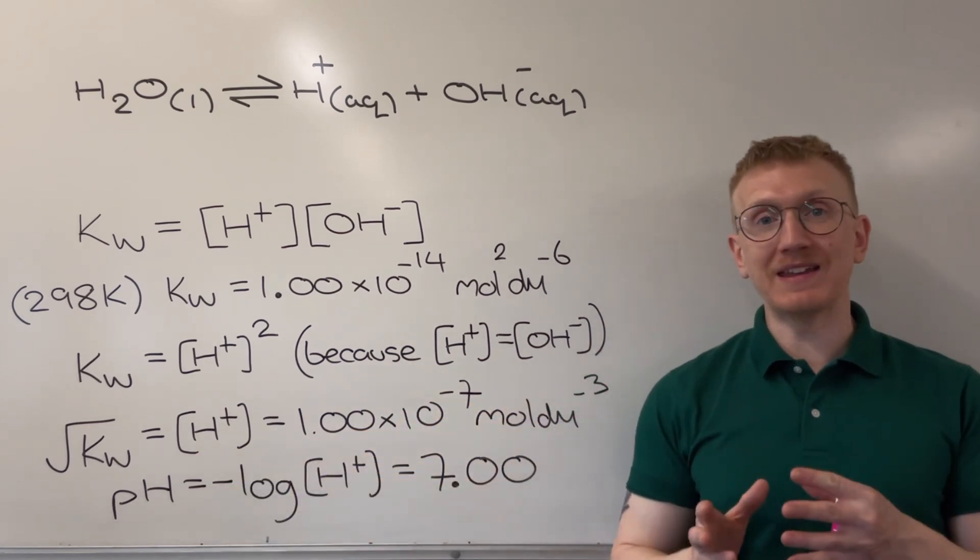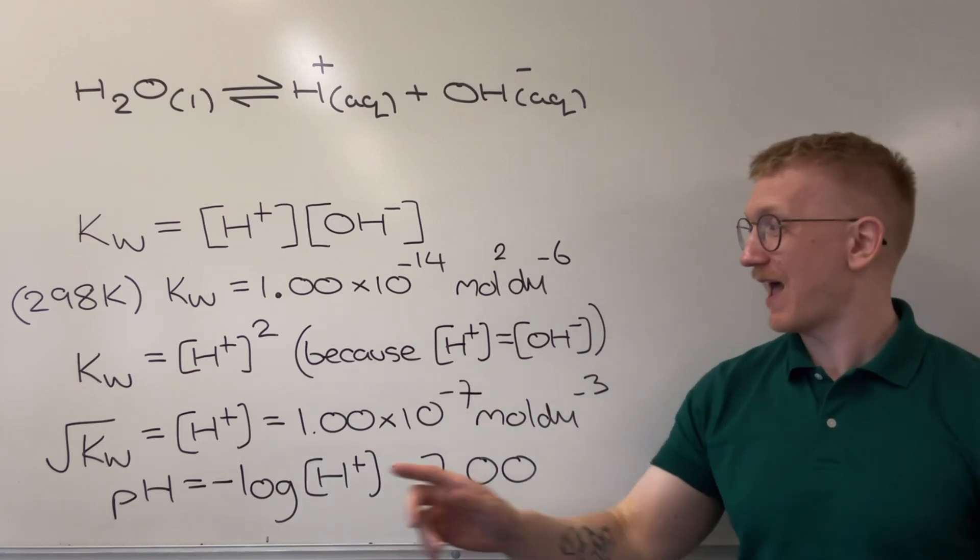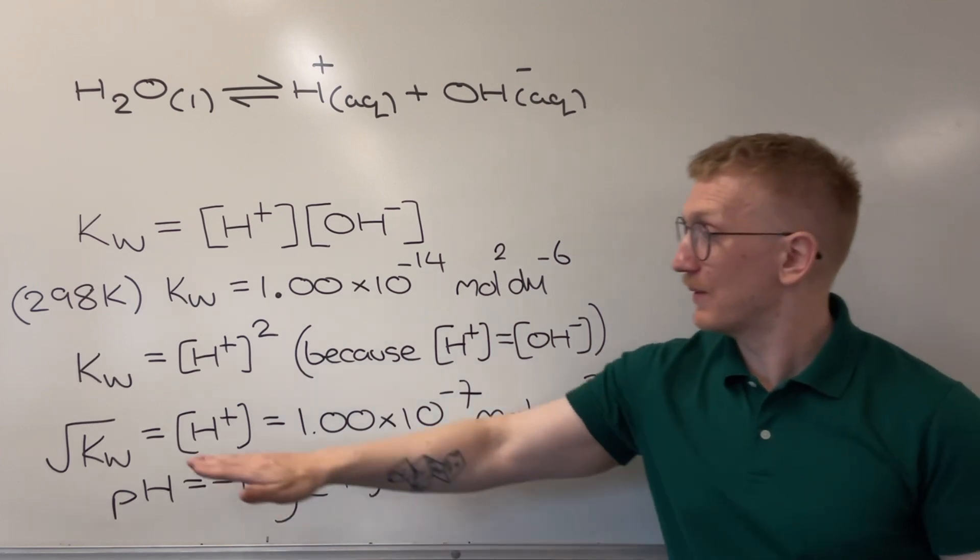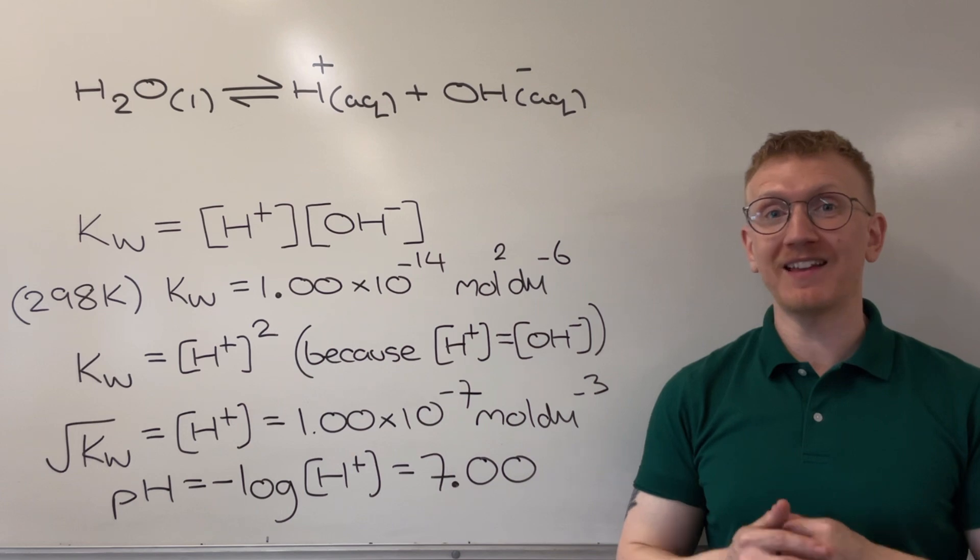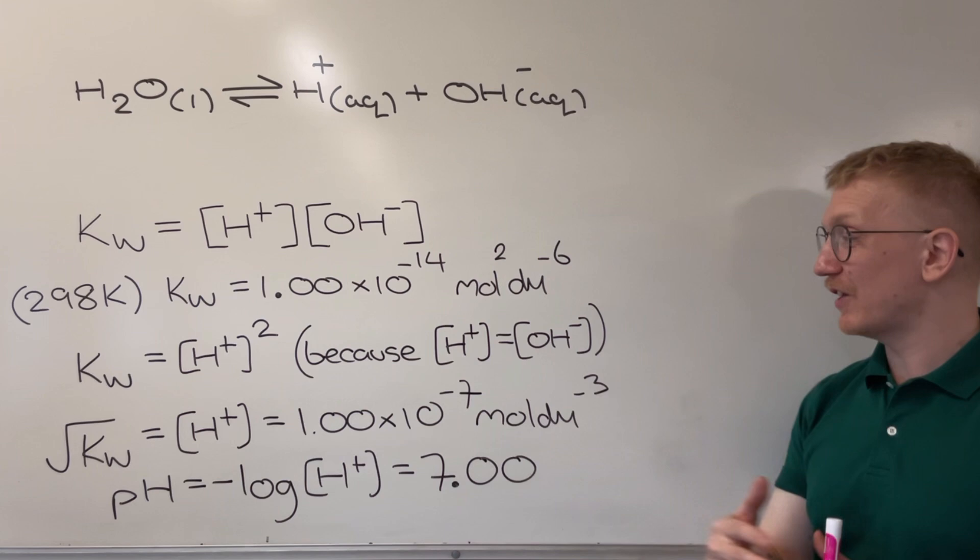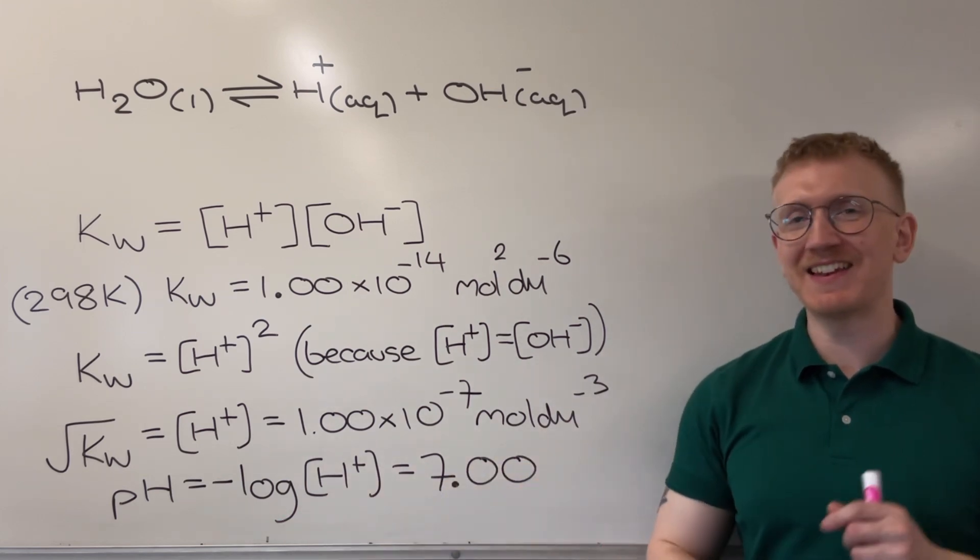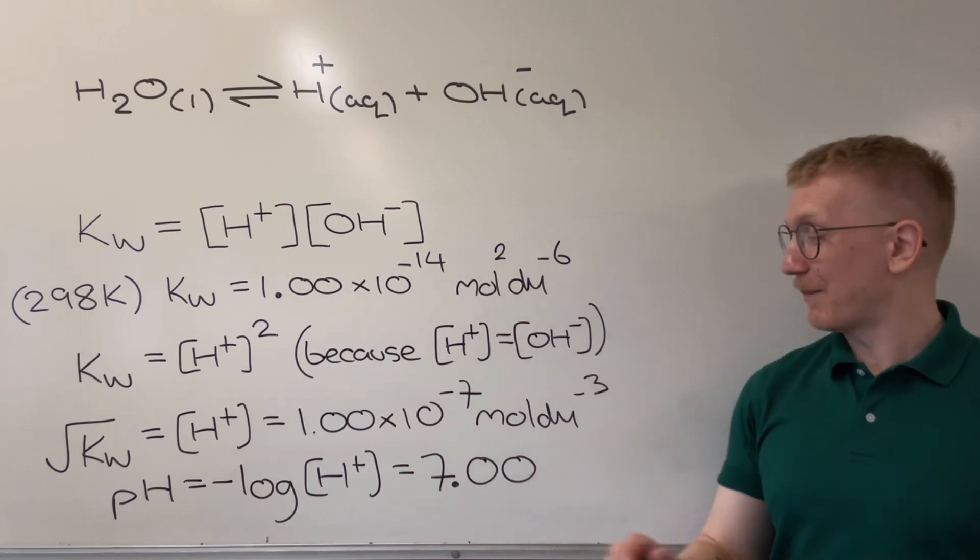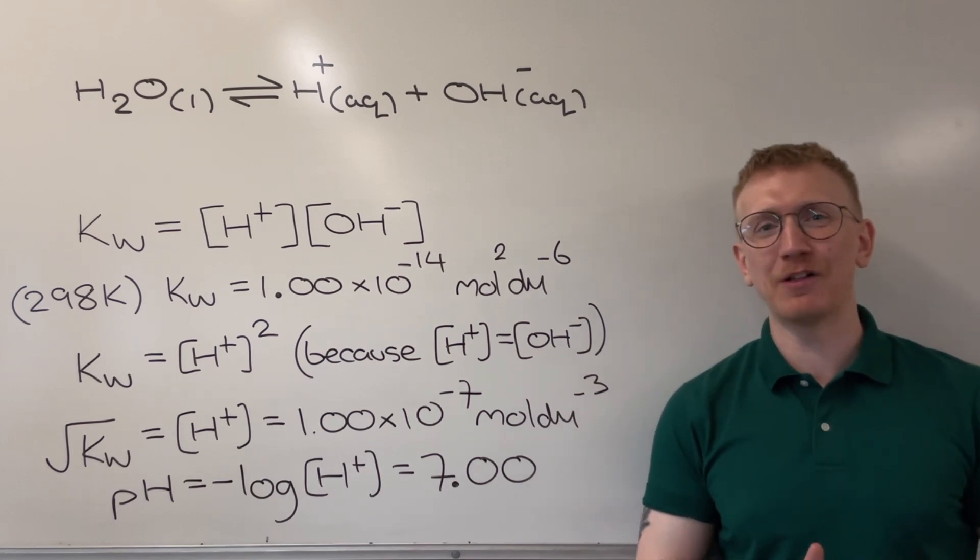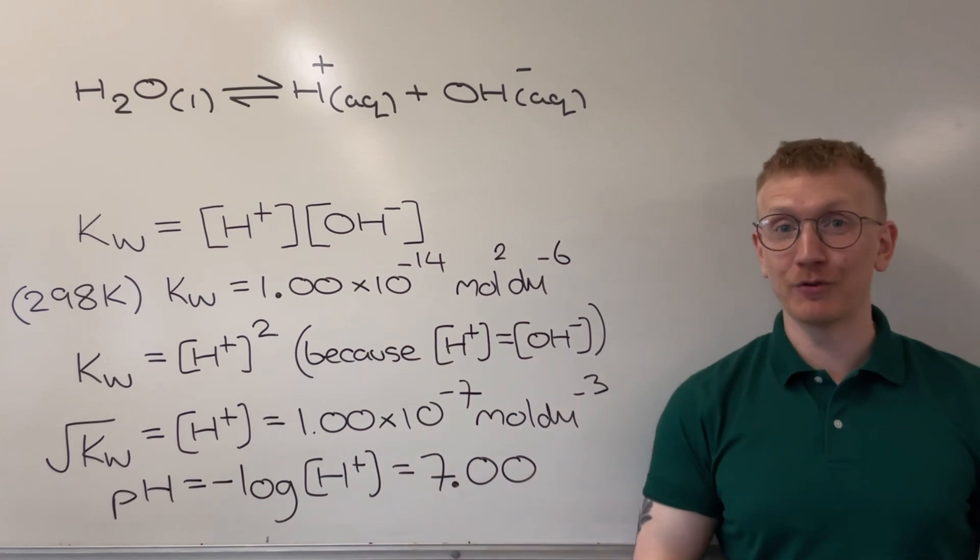That means I can rearrange to make H plus the subject. Why is that significant? Because we know if we have an H plus ion concentration, we can calculate a pH. So when we do make H plus the subject and calculate the square root of our KW at 298 Kelvin, we're given a value of 1 times 10 to the power of negative 7. As soon as we put that into the negative log expression, we can calculate the pH of pure water at 298 Kelvin, which is pH 7, but perhaps never understood why.